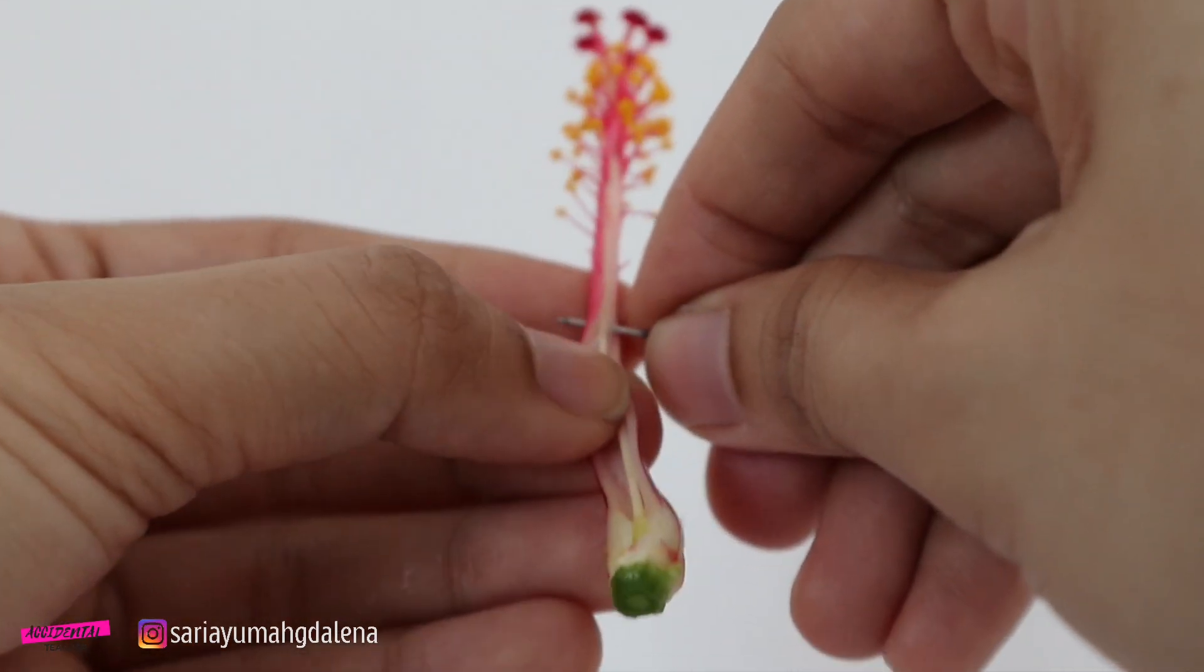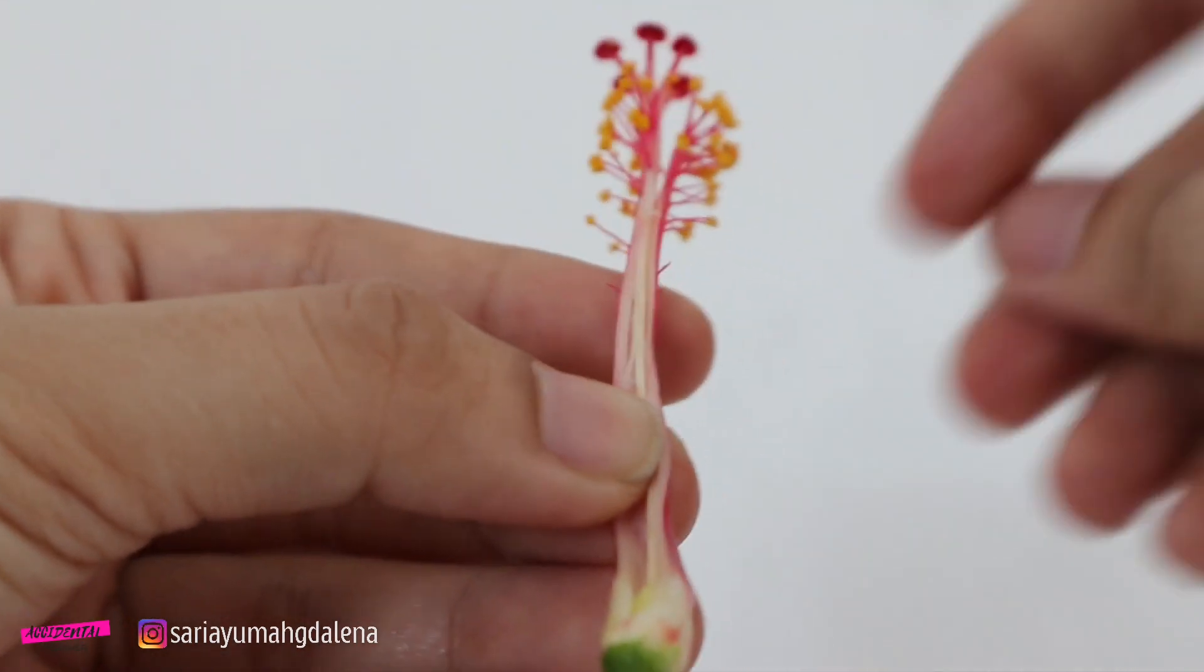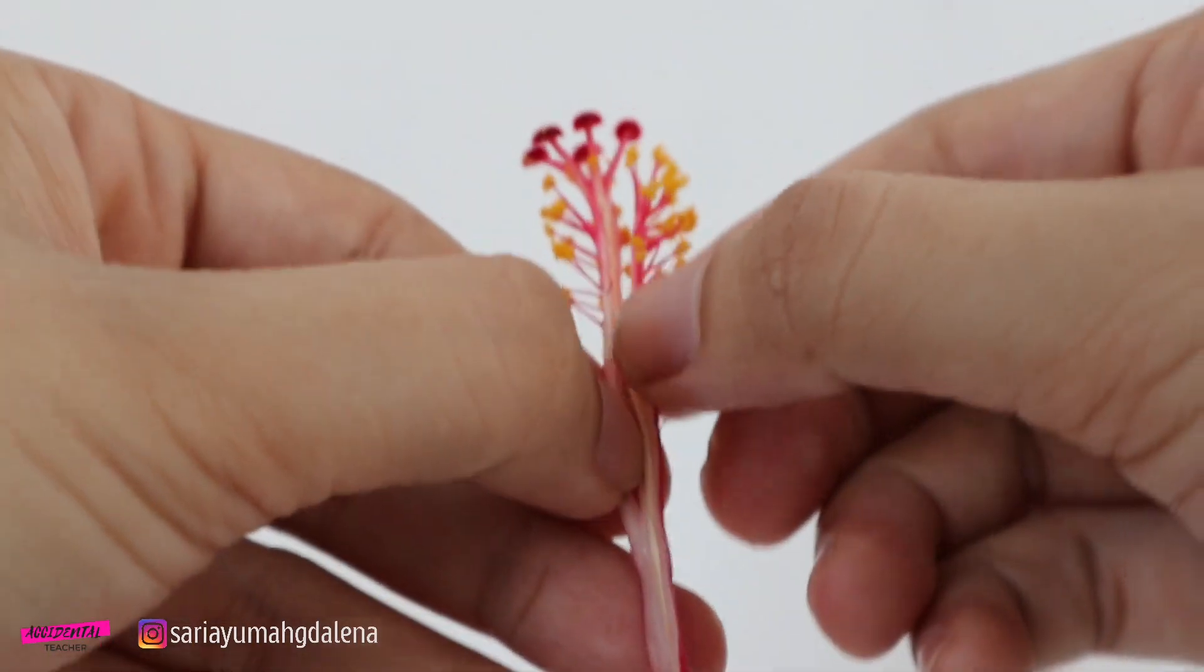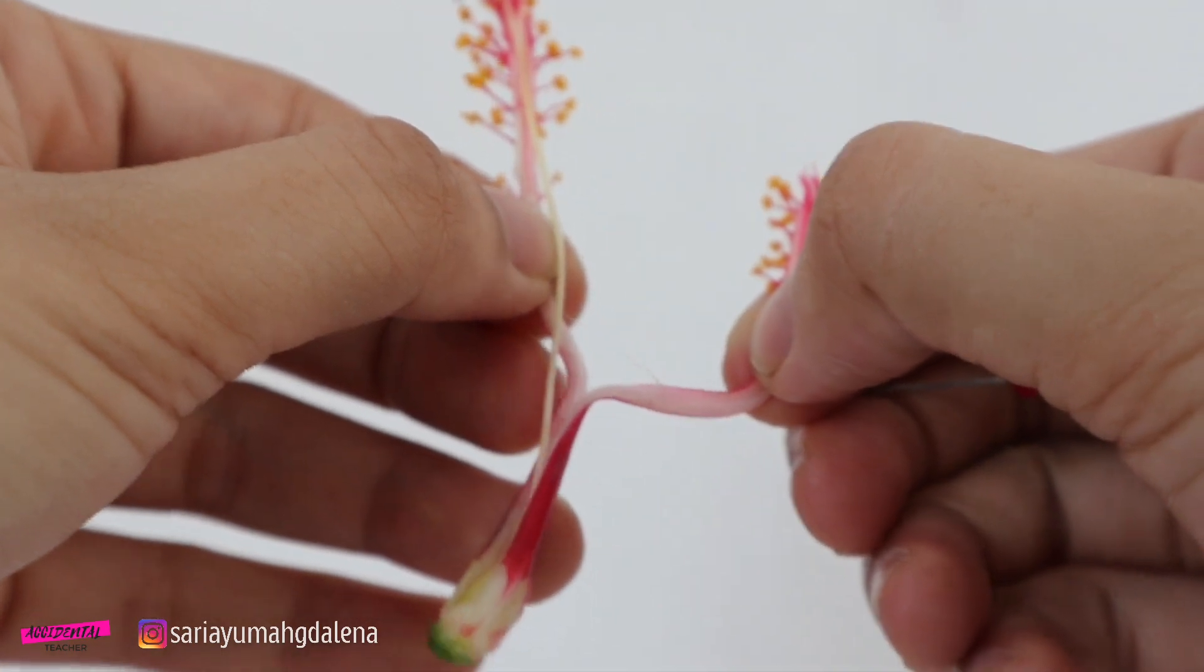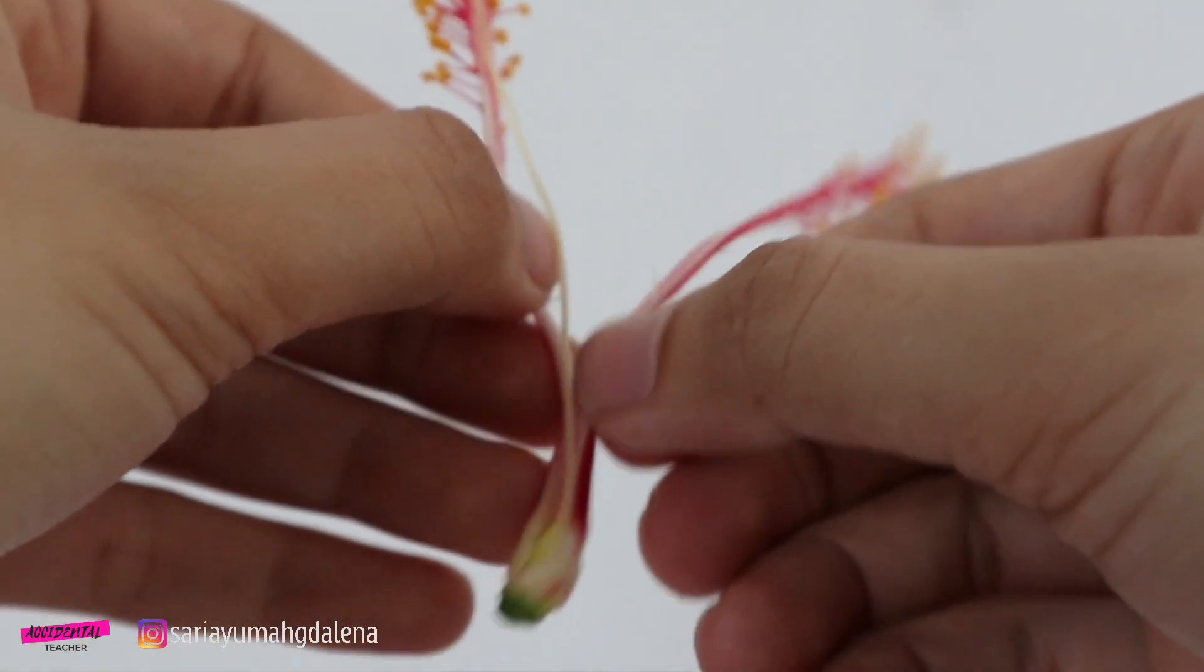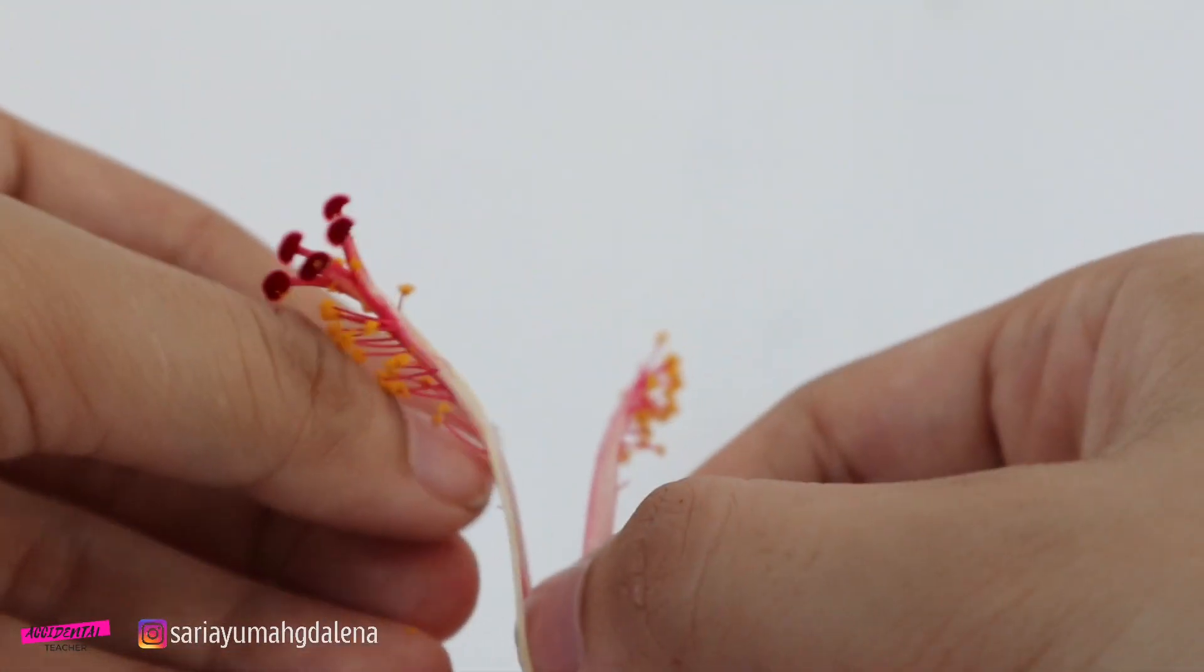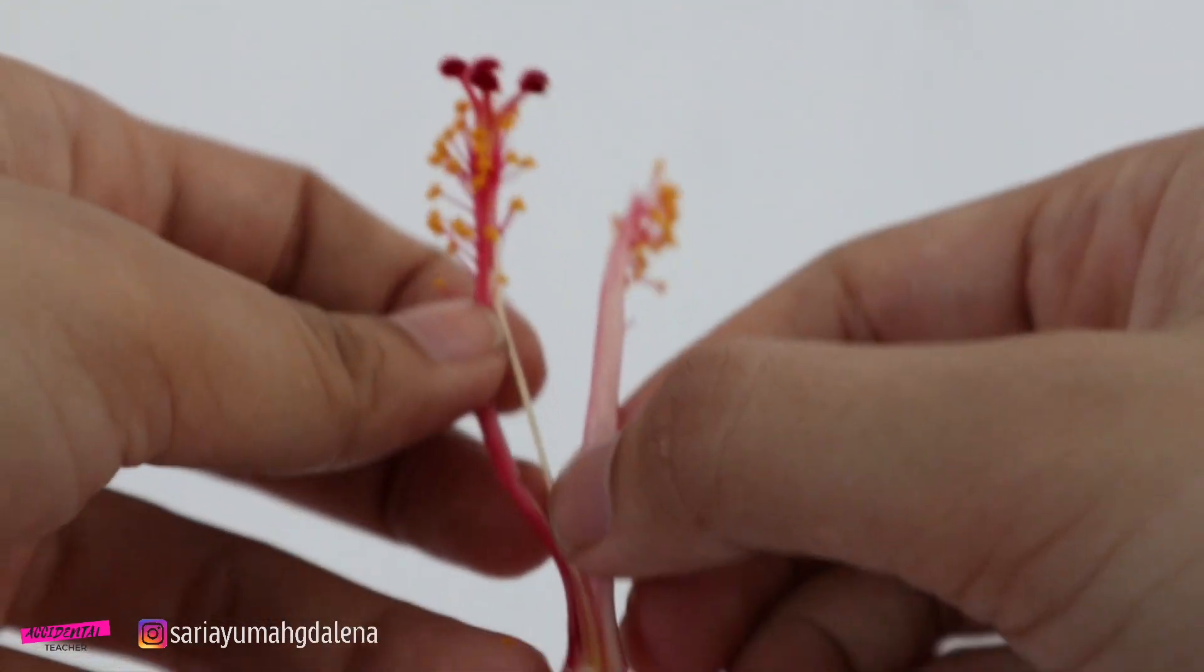The ovary contains and protects the ovules. The ovary and the stigma is connected by a tube. So it's a long tube from the stigma and connect to the ovary.